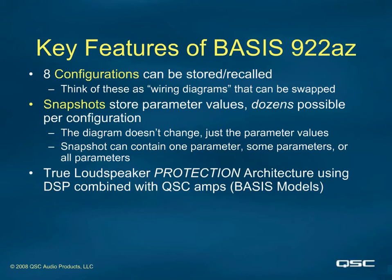There is a built-in database of all QSC amplifiers and loudspeakers, both in the Venue Manager GUI and inside the Basis itself. The Basis already knows what amp model is being used. You merely use the GUI to choose what model and quantity of loudspeakers you are connecting to each amp channel, and the auto power limiter's DSP algorithm does the rest. If you're not using QSC loudspeakers, not to worry — you can add the parameters for additional makes and models of non-QSC loudspeakers to the database.